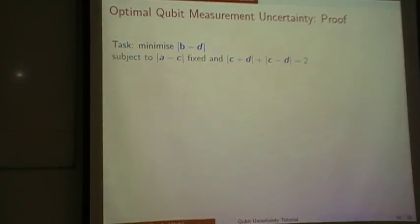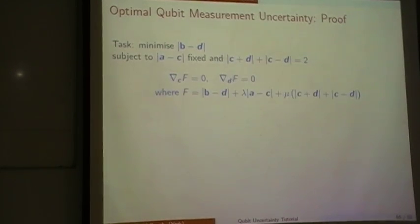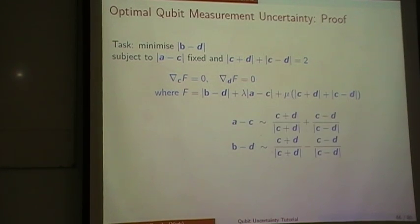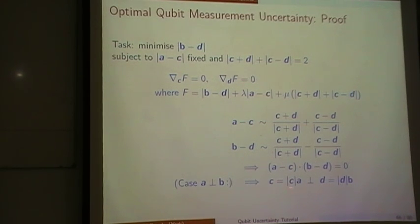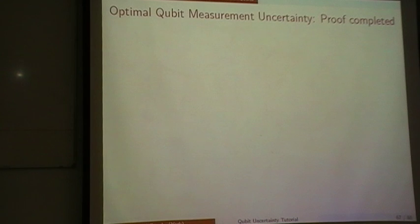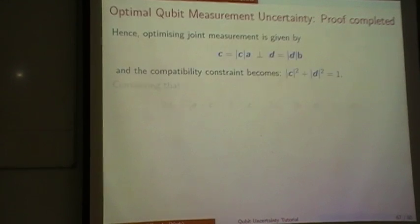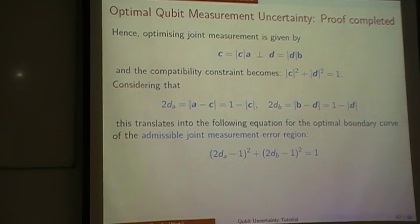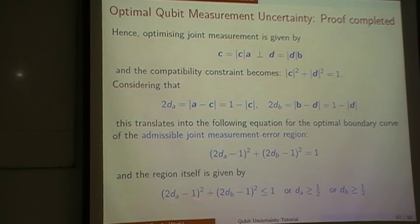I'll skip the proof of that. You see it's really just running through some calculus, and the proof here is that the orthogonality of C and D is really required if A and B are orthogonal. So that's the admissible joint measurement error region.